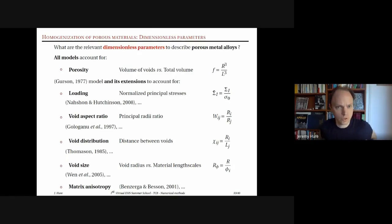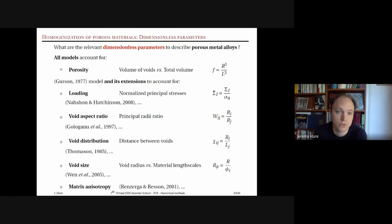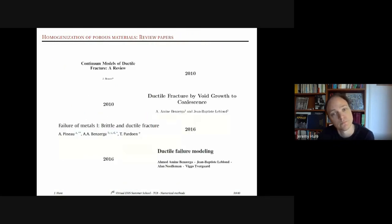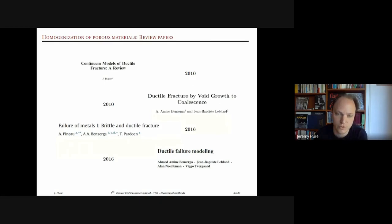All models in the literature account for porosity f — the Gurson model and its many extensions. These extensions address other loading conditions such as shear, non-spherical void shapes like ellipsoids or spheroids, void distribution relevant to coalescence starting from Thomason, and void size effects accounting for matrix length scales. Review papers on ductile fracture detail all these extensions.